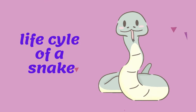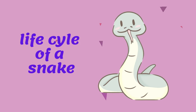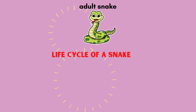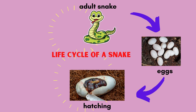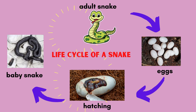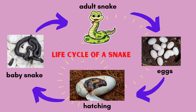Life cycle of a snake. An adult snake will lay eggs. Eggs will hatch, and baby snakes come out and will grow into an adult snake.